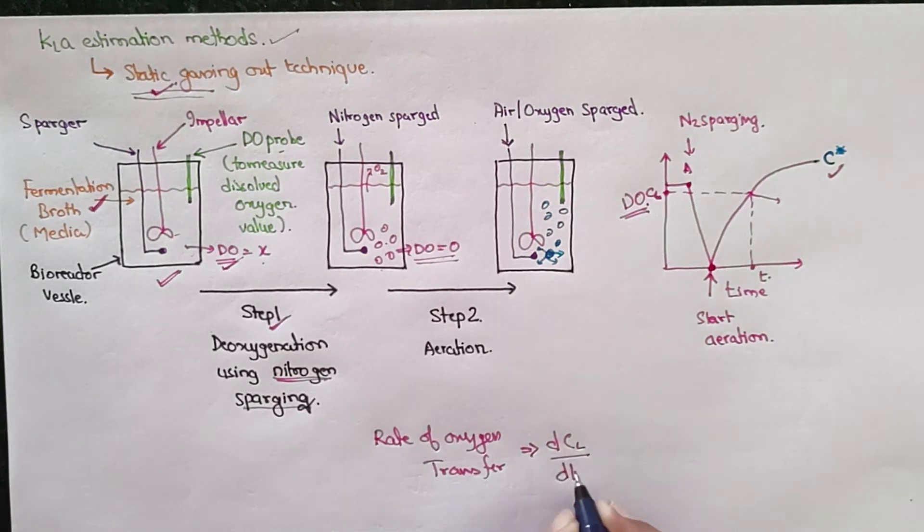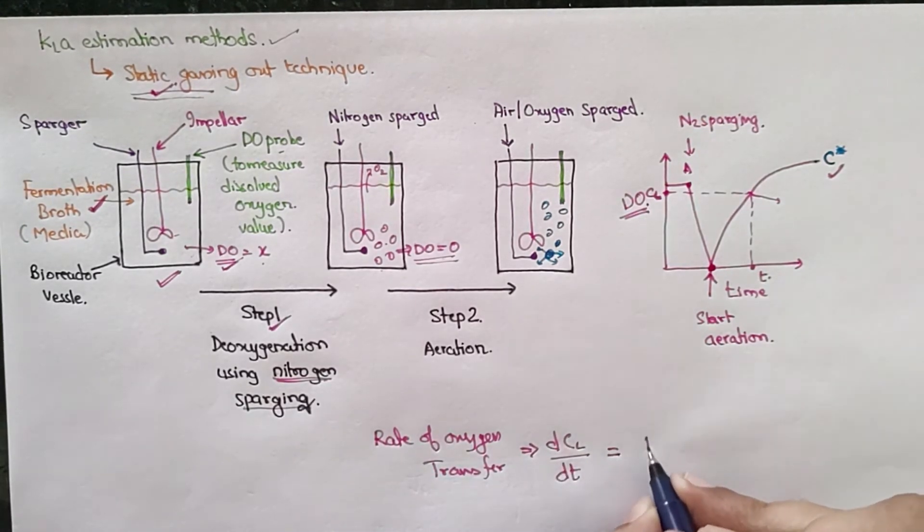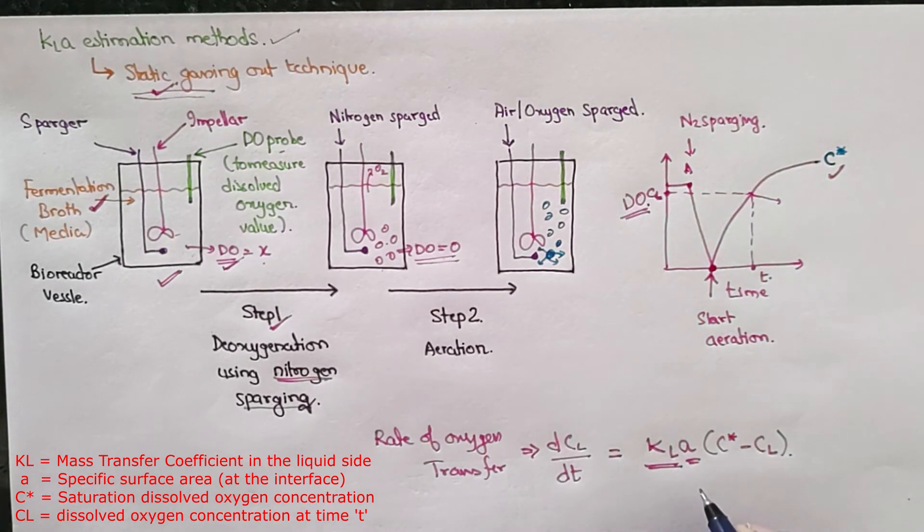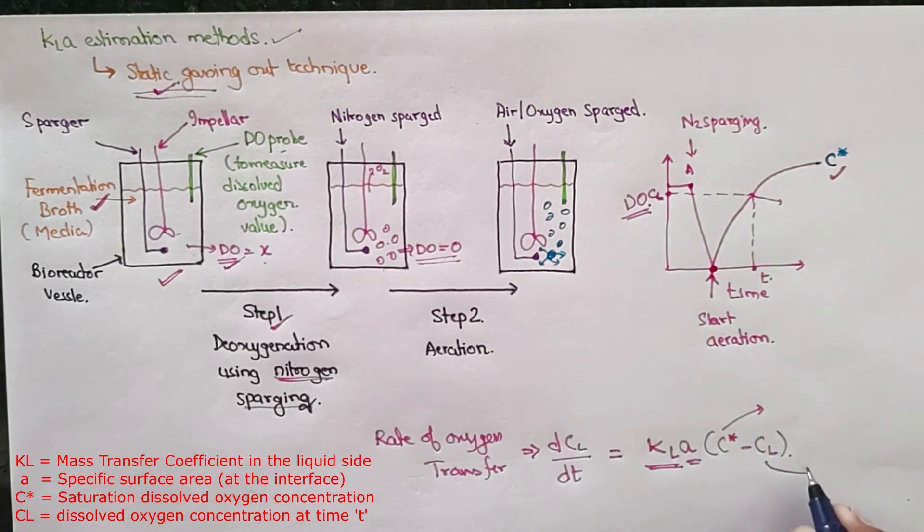KLA(C* - CL). So KL is the mass transfer coefficient in the liquid side. A is the specific surface area. C star is the dissolved oxygen concentration at saturation, and CL is the dissolved oxygen concentration at a particular time T.